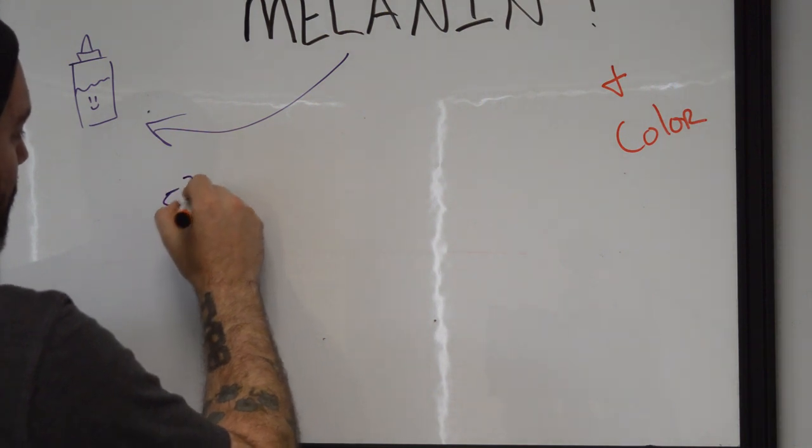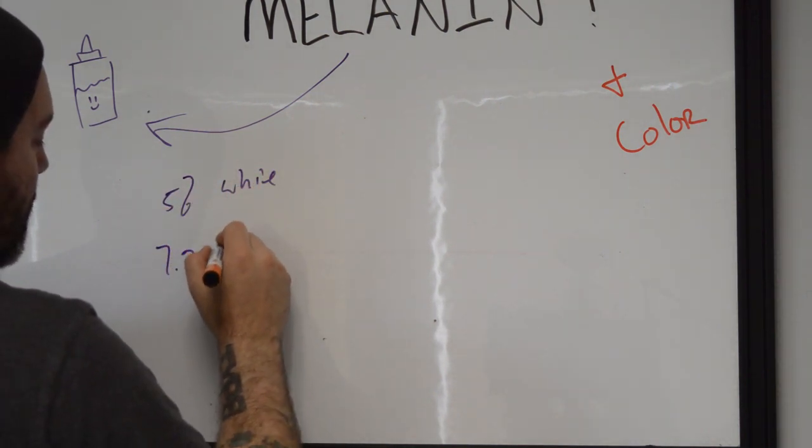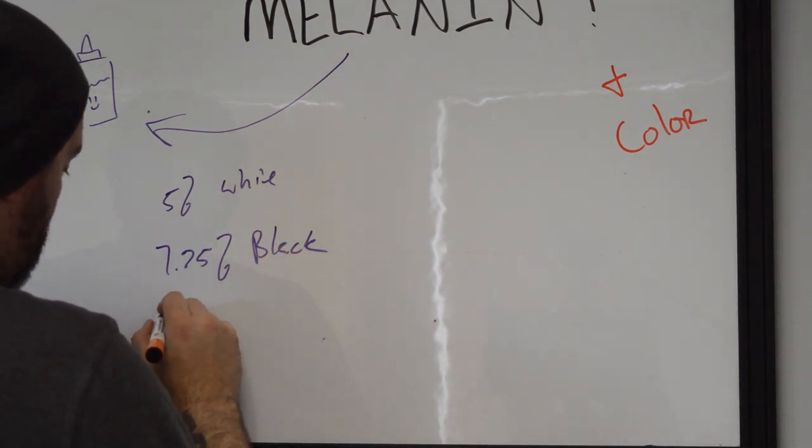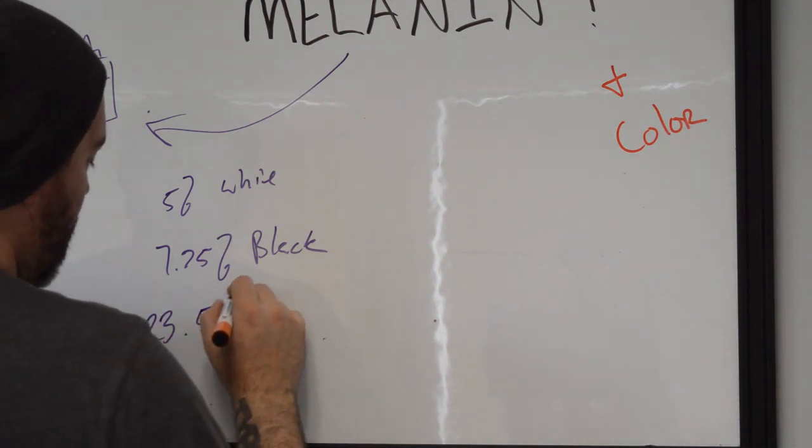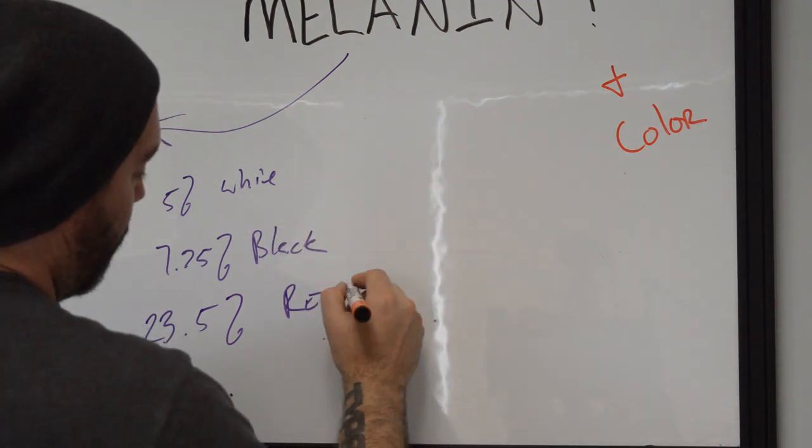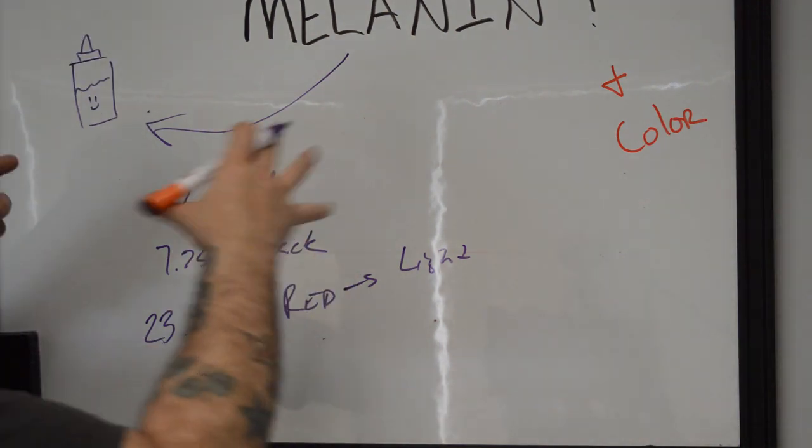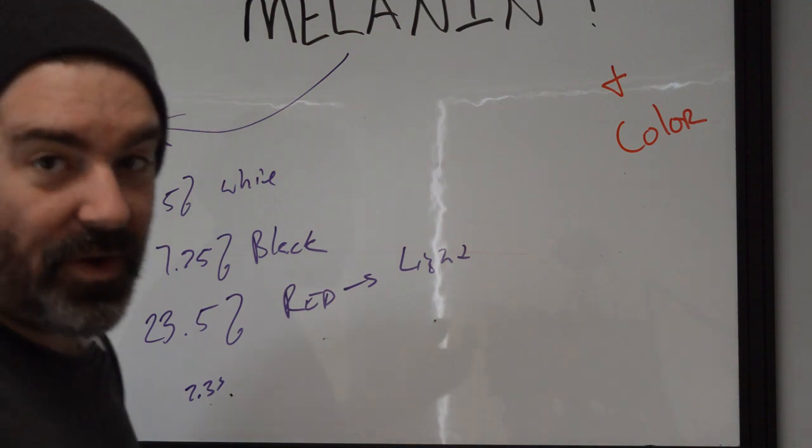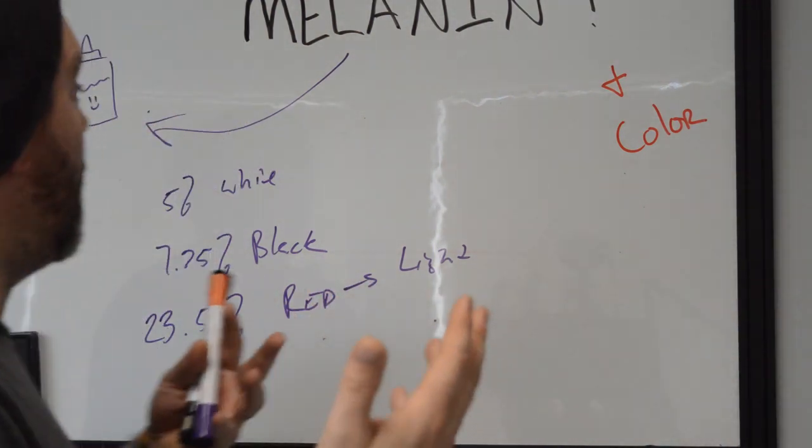5% of it is white. 7.25% of it is black. We've got 23.5% is red, whatever. And we've got 2.3% light. You know what I mean? Like we start doing all this stuff. We're like, oh my God, we have all this stuff and it's making it so we have this very crisp kind of like candy apple red color. That's great.